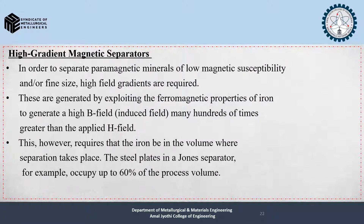High gradient magnetic separators: in order to separate paramagnetic minerals of low magnetic susceptibility and fine size, high field gradients are required. These are generated by exploiting the ferromagnetic properties of iron to generate a high B field many hundreds of times greater than the applied H field. However, this requires that the iron be in the volume where separation takes place.